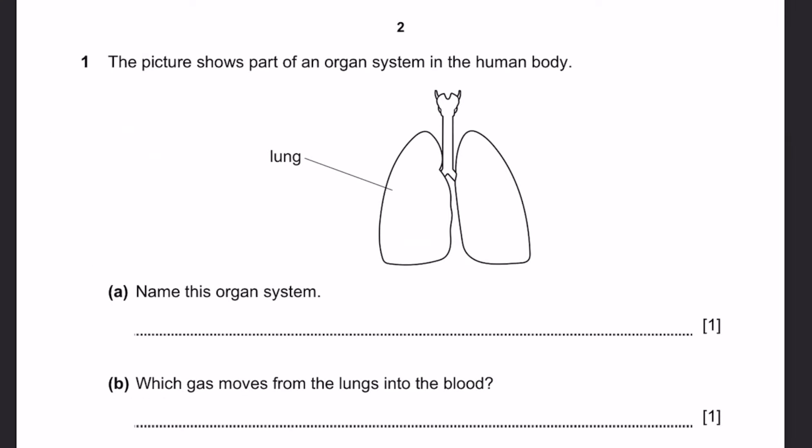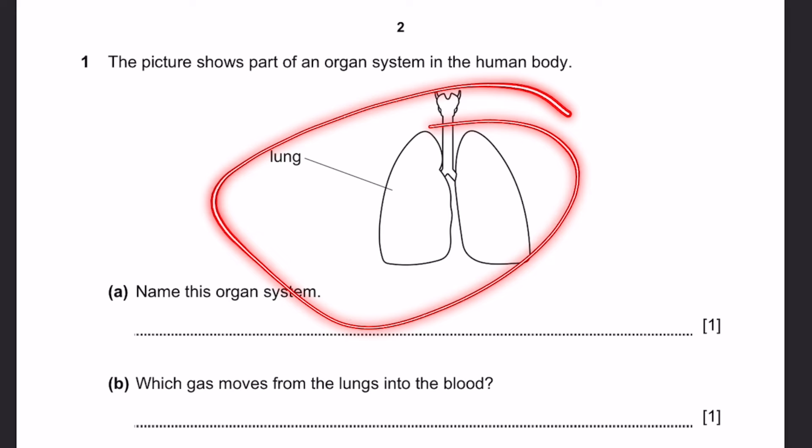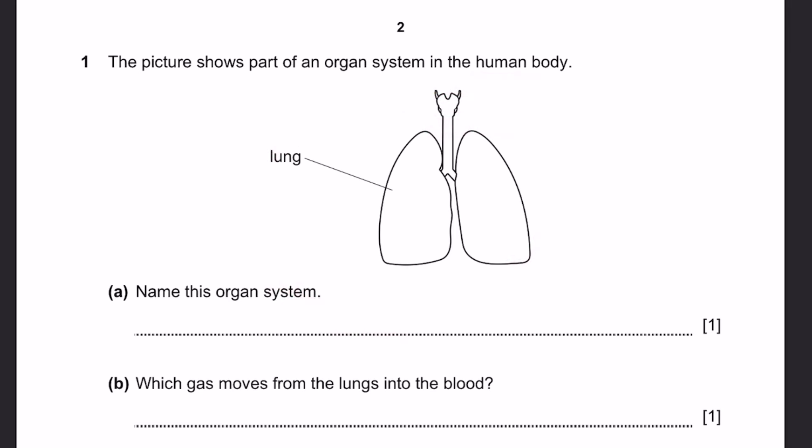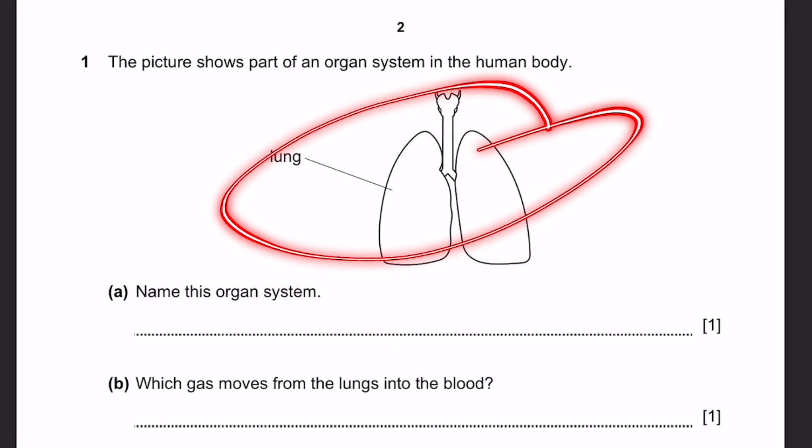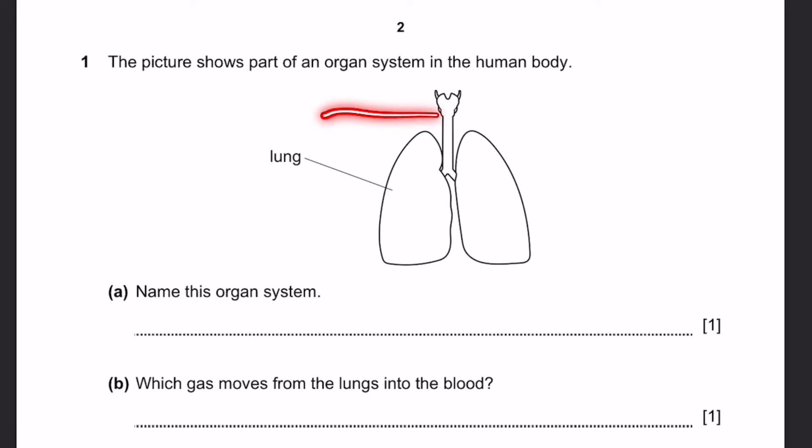Question 1. The picture shows part of an organ system in the human body. This is the lung. Part A: Name this organ system. The lung is an organ, and the organ system to which it belongs is the respiratory system, since it helps us to breathe. That's the answer.